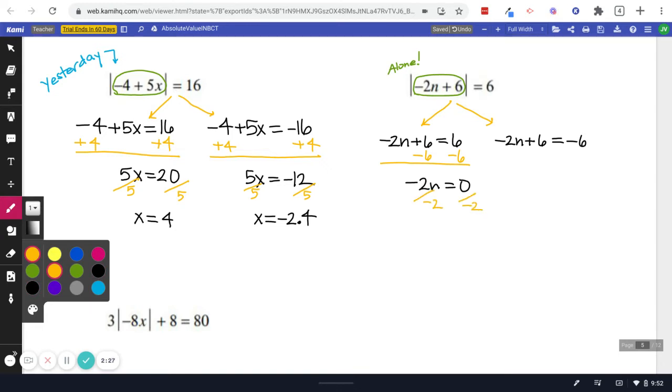And so then one of our answers is n equals 0. We'll go to the other side. We'll subtract 6 from both sides. And get negative 2n is negative 12. And then we'll finish by dividing. And so n equals positive 6.